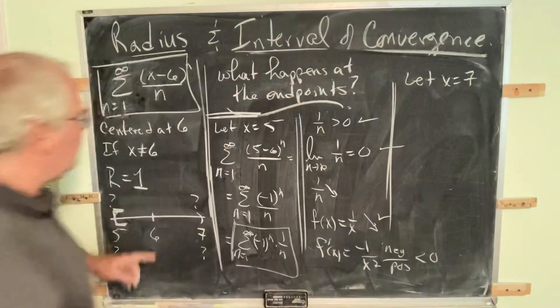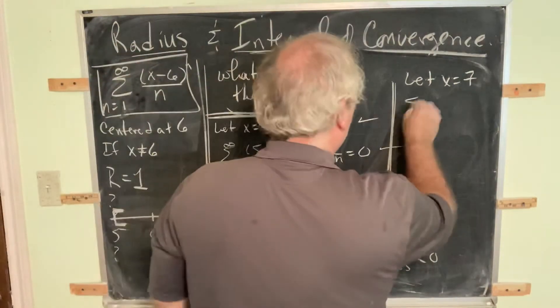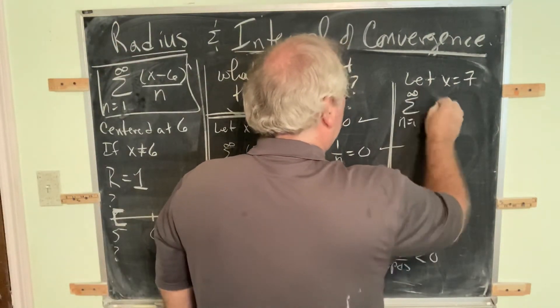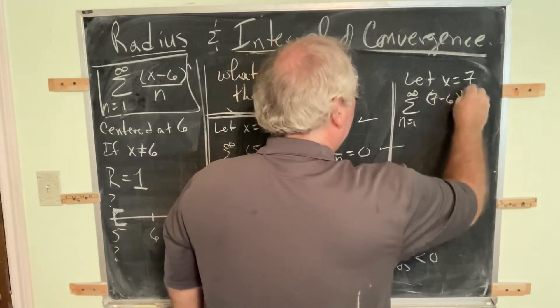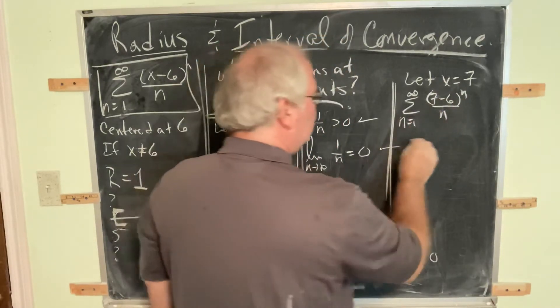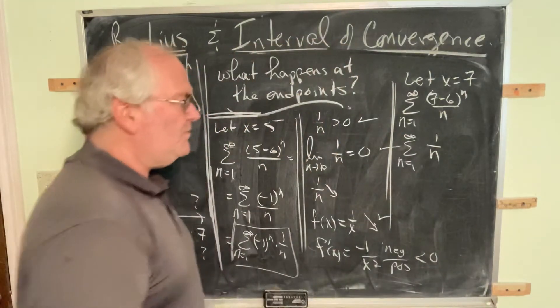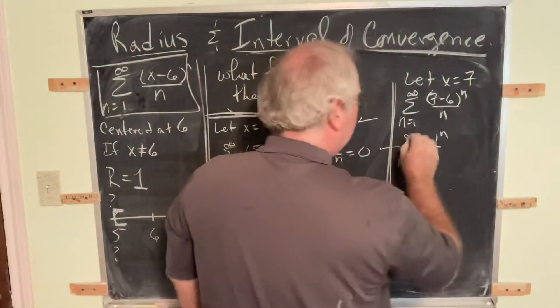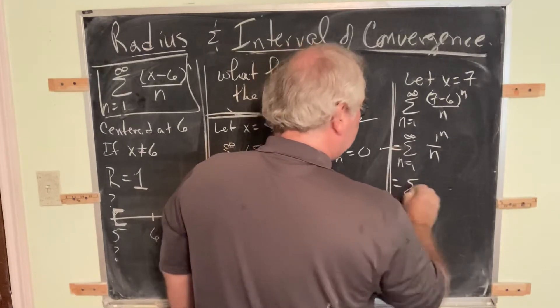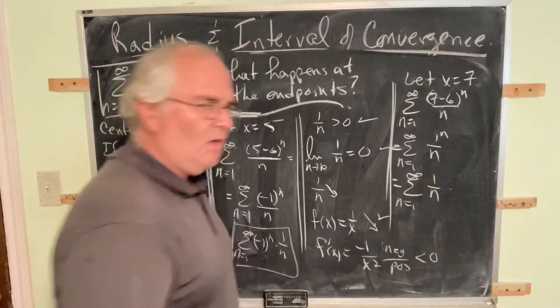Let x equal 7. Same song, second stanza. Except we got (7-6)^n over n. You don't get negative 1, you get positive 1. That's all you get. Because positive 1 to the n simplifies to just 1, 1 over n.